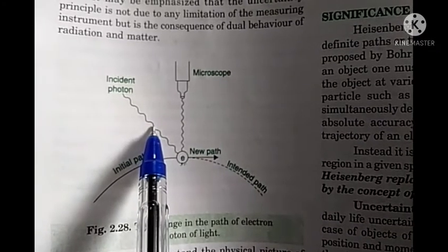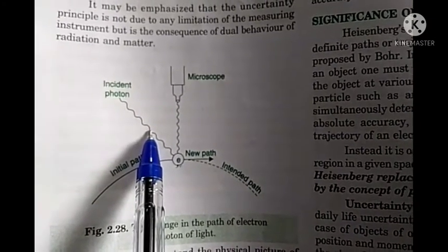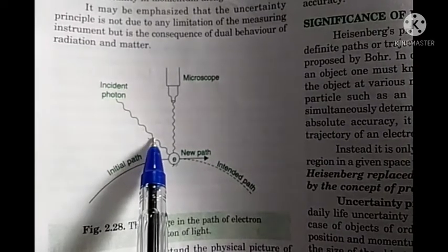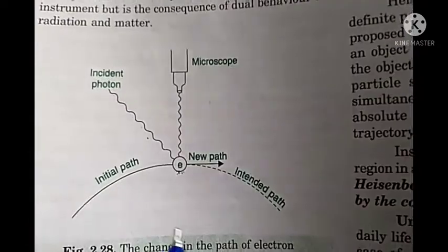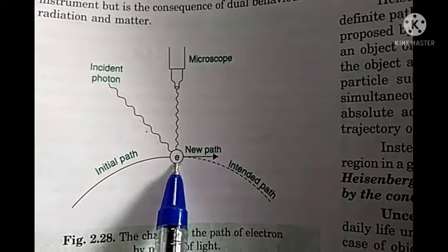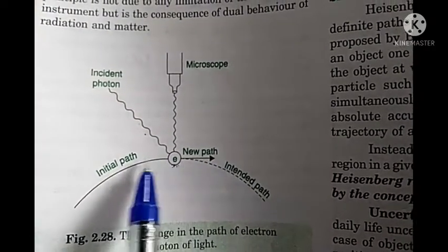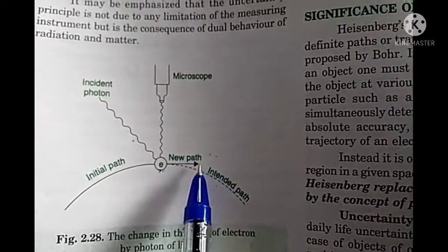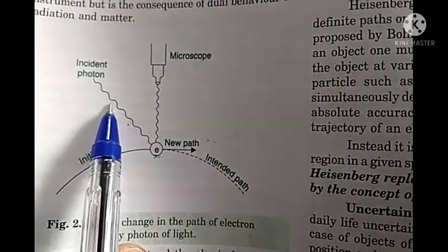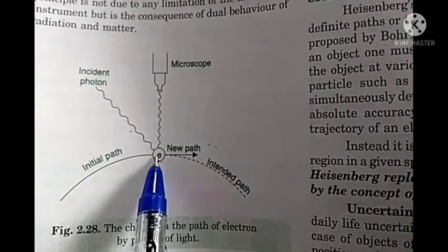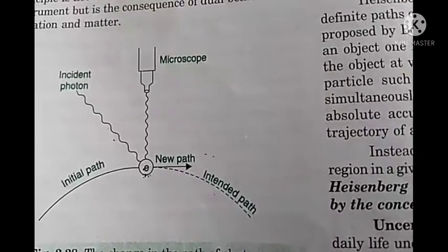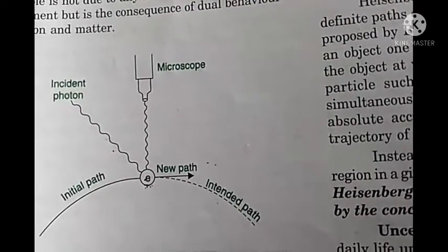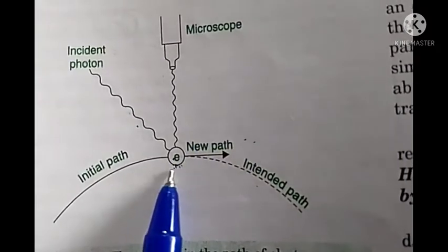But smaller wavelength means higher frequency, and higher frequency means higher energy. So this incident radiation has higher energy. When this highly energetic radiation hits the electron, its energy will change and the electron will start to move very fast, deviating from its normal path. As a result, its velocity we cannot determine accurately. So using smaller wavelength radiation, we can determine the position accurately, but at the same time its velocity will change, so we cannot determine the velocity accurately. Both position and velocity cannot be determined accurately simultaneously for a moving particle like an electron.